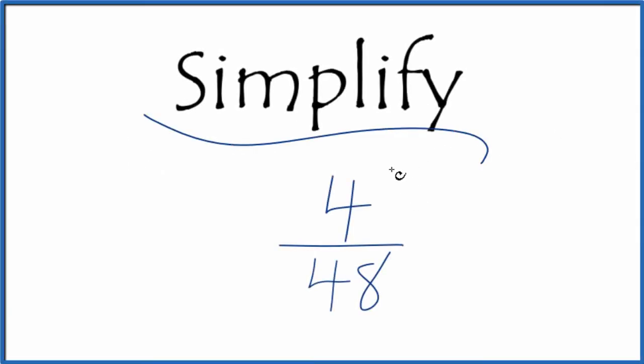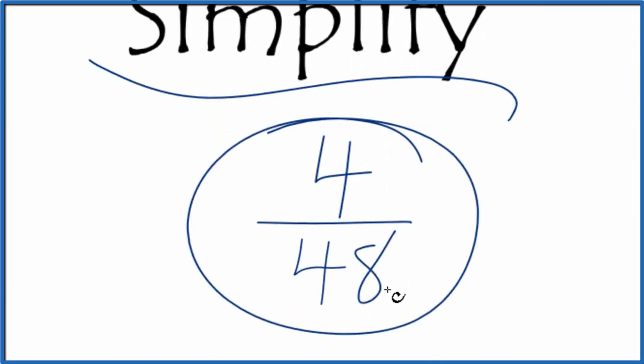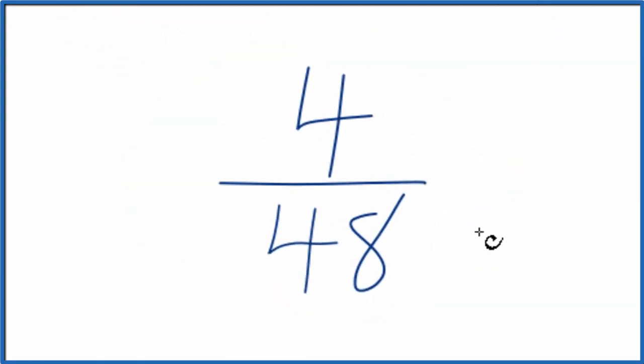If you need to simplify the fraction 4 over 48, here's how we can do that. In order to do that, what we need to do is figure out a common factor, something that goes into 4 and 48 evenly.